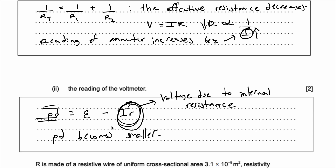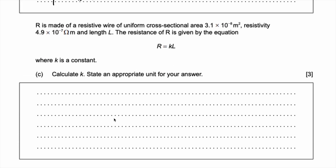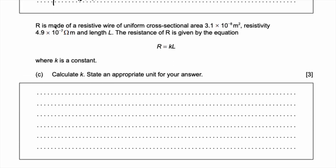Part C: R is made of a resistive wire of uniform cross-sectional area of 3.1 × 10⁻⁸ m², resistivity equal to 4.9 × 10⁻⁷ ohm·meter, and length L. The resistance of R is given by the equation R = kL.